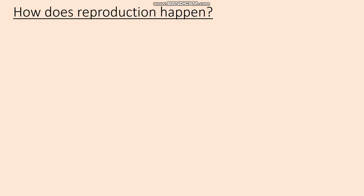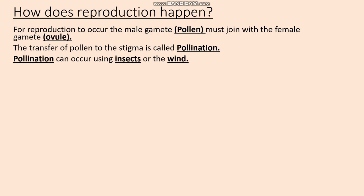Okay, so how does reproduction in plants actually happen? For reproduction to occur the male sex cell — pollen — must join with the female sex cell, just like sperm must meet egg in animal reproduction. The transfer of pollen to the stigma — remember the stigma is the one that catches the pollen, the female part of the plant — is called pollination. Pollination can occur in two main ways: either by transfer by animals or transfer by the wind.